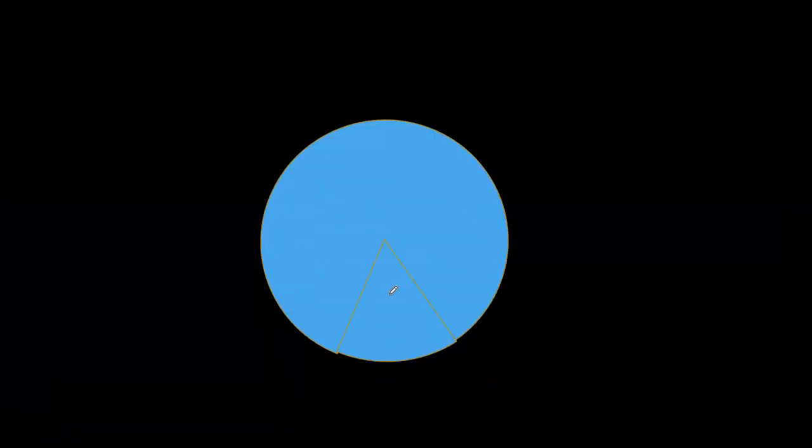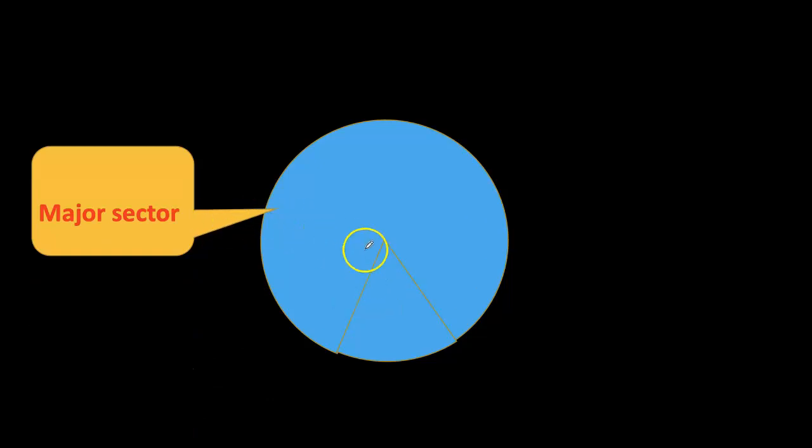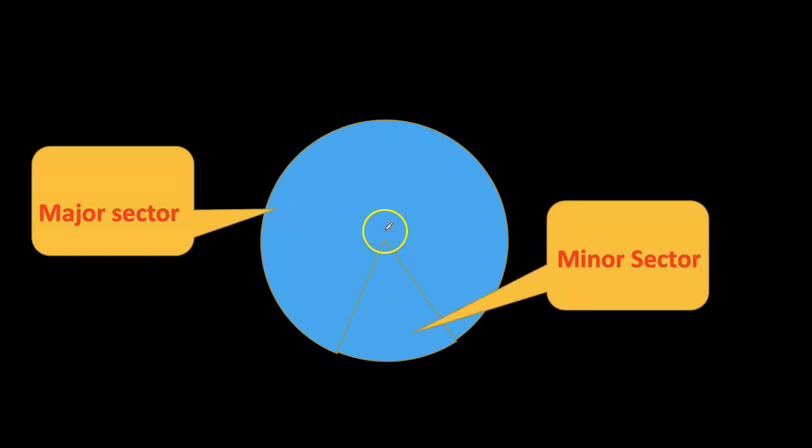There are two sectors: one is a major sector and the other one will be the minor sector. Here OA and OB are the radius. The major sector and minor sectors depend on the sector angle.